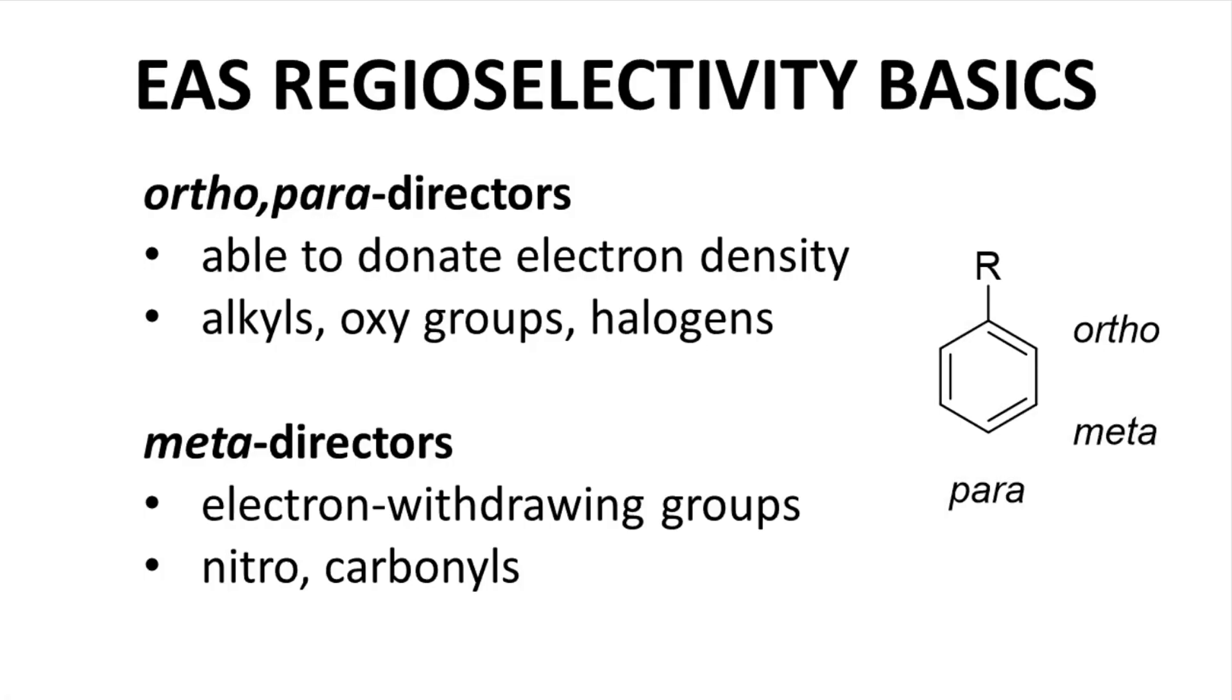Electrophilic aromatic substitutions – EAS reactions – often involve questions of regiochemistry. If you do a substitution on a ring that already has a substituent – an R group – then is the new group introduced ortho, meta, or para relative to the original group? This is a regiochemistry question. In general, the regiochemistry depends on the nature of the R group.